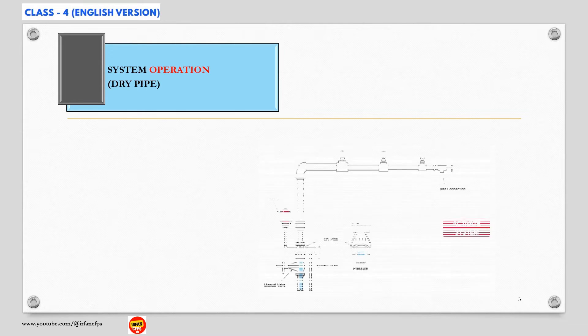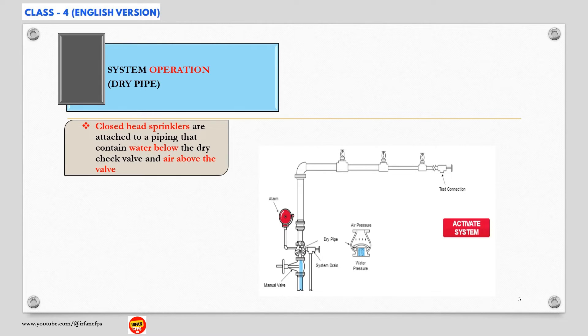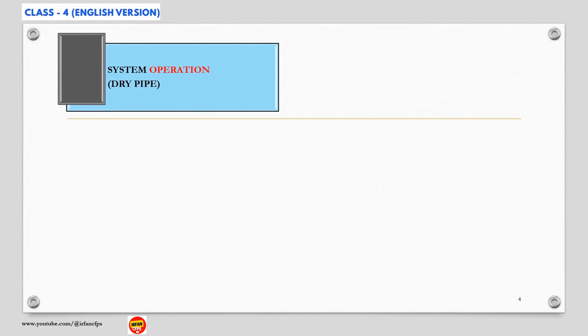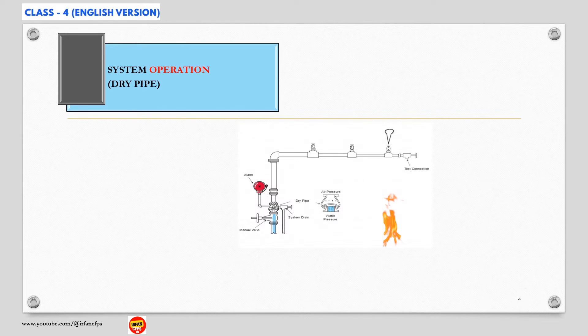As we discussed in our previous slide, in this system, closed head sprinklers are attached to a piping network that contains water below the dry type valve and pressurized air above the valve. Like a wet pipe system, when the temperature at the ceiling becomes hot enough, the glass bulb or fusible link of the sprinkler breaks.